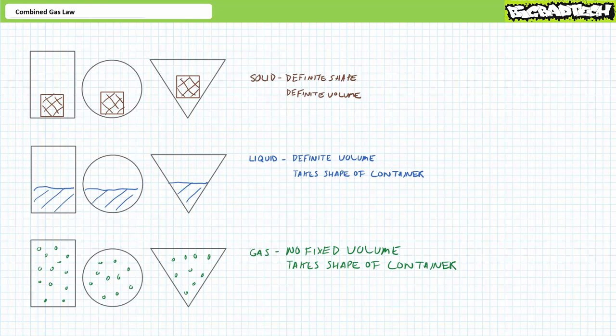Gases have no definite volume nor a defined shape and fill the shape and volume of their container. The molecules composing a gas aren't in close contact with one another and they buzz around like a swarm of bees. The hotter the gas, the angrier the bees. All that empty space inside a gas gives gases a unique property: that of compressibility.